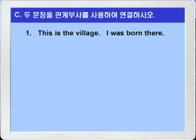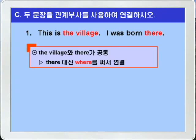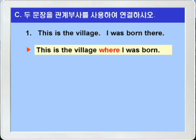C번 1번. 'This is the village. I was born there.' 이곳이 그 마을이다 — I was born there — 나는 그곳에서 태어났다. 두 문장에서 the village와 장소의 부사 there가 서로 공통이죠. 따라서 the village를 선행사로 하고 장소의 부사 there 대신에 장소의 관계부사인 where를 써서 선행사인 the village에 연결시키면 되겠습니다. 'This is the village where I was born.' — 이곳은 내가 태어난 마을이다.